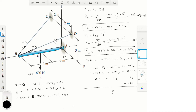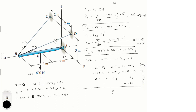We have three equations but five unknowns, so we need more equations. To find them, we'll take the sum of moments about a certain point. If we sum moments about point A, we eliminate the three reaction variables Ax, Ay, Az, making life easier — so we pick the sum of moments about A.